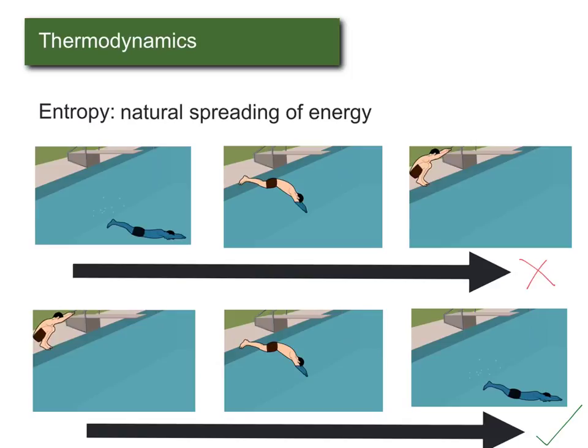And entropy is often thought of as the amount of disorder in a system. And that's not completely true. It's really spreading of energy. But as something becomes more disordered, the energy is also spread out more.